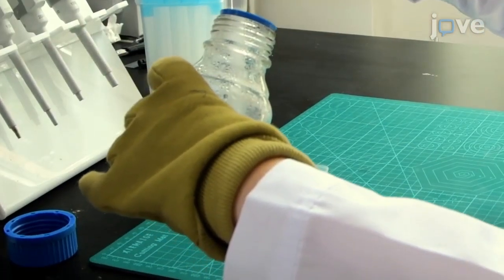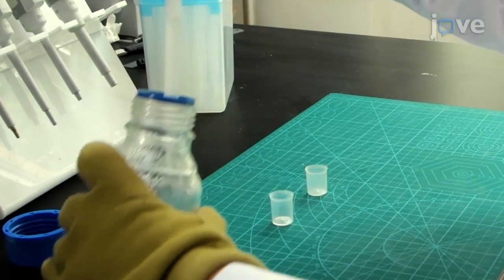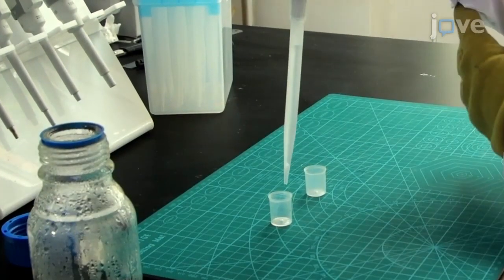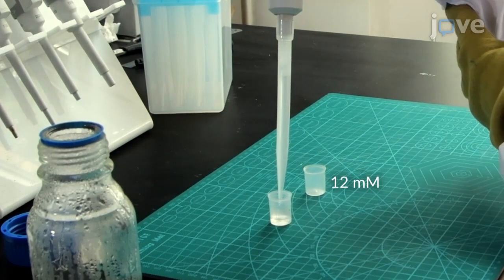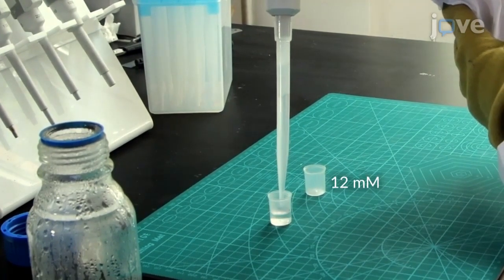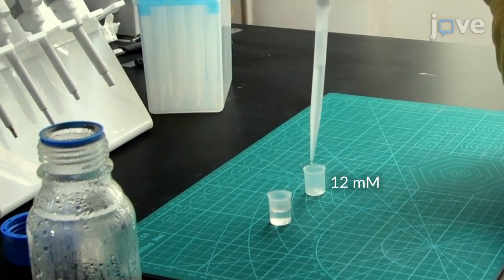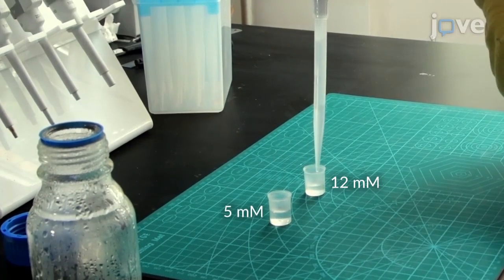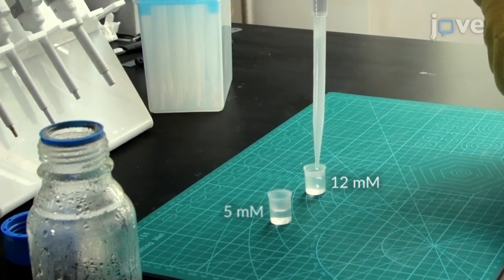Pour 1% agar into the FBOC to adjust its depth. If food needs to be placed in the FBOC, pour the agar to obtain a depth of 12 mm. If food does not need to be placed, pour the agar to a depth of 5 mm to track the whereabouts of fruit flies more easily.